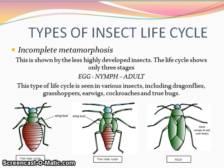The wings develop during the nymph stage as small buds, and are fully formed at the final molt into adulthood. This type of life cycle is seen in various insects, including dragonflies, grasshoppers, earwigs, cockroaches, and true bugs.